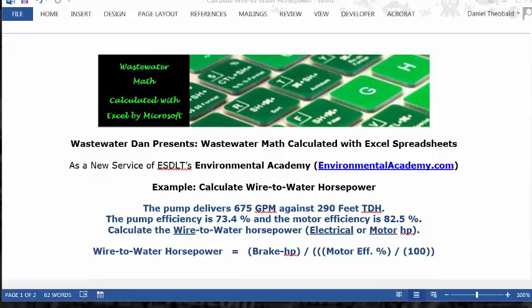today's example: calculate wire-to-water horsepower. Today's problem reads: the pump delivers 675 GPM against 290 feet TDH. The pump efficiency is 73.4% and the motor efficiency is 82.5%. Calculate the wire-to-water horsepower. Sometimes wire-to-water could be interchanged with electrical or motor horsepower.